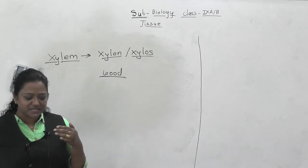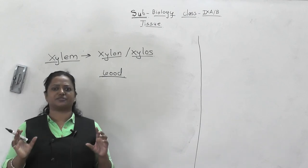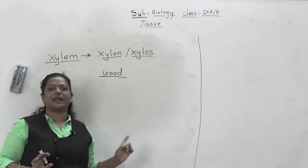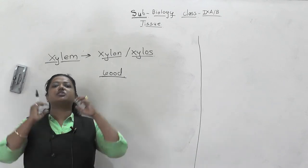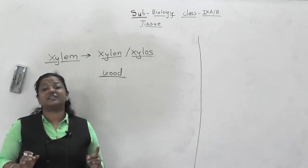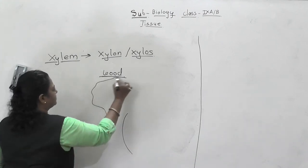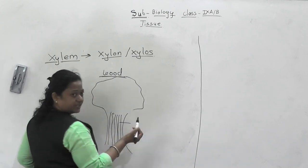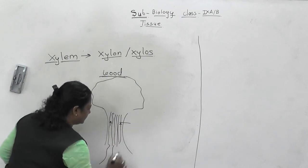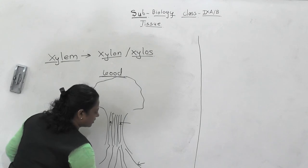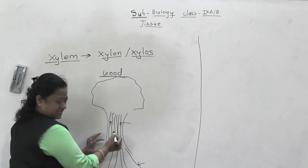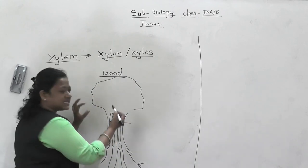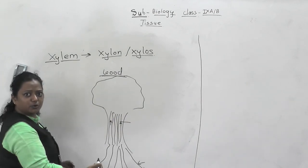Just like a plumbing system carries water from the source and reaches every part of a building, in the plant also water is drawn from the root system and reaches every part of the plant body. The flow of water in xylem is unidirectional - the water flows from the root upward to the plant in only one direction.